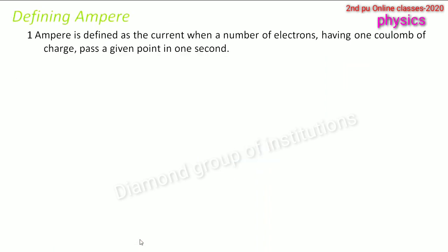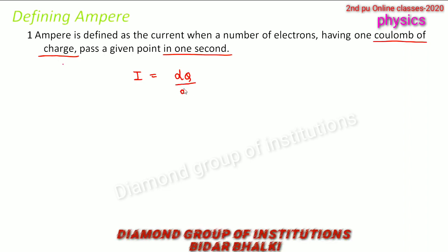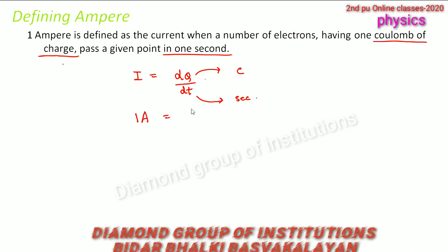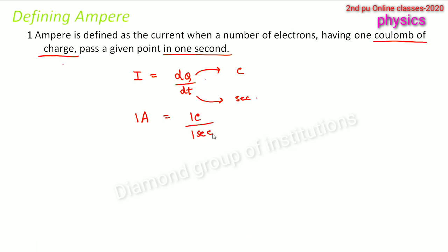Let us define ampere. One ampere is defined as the current when electrons having one coulomb of charge pass a given point in one second. Since current is dq/dt — charge per unit time — and the unit of charge is coulomb and the unit of time is second, one ampere is simply one coulomb per second.